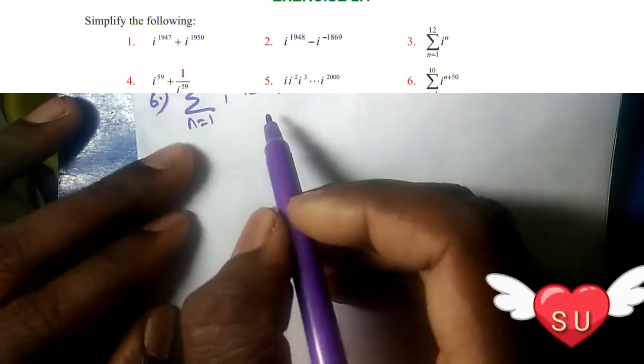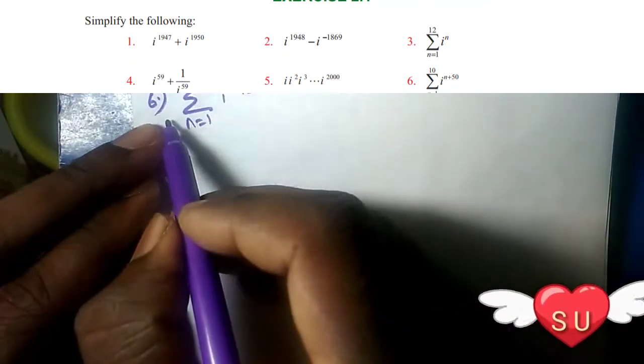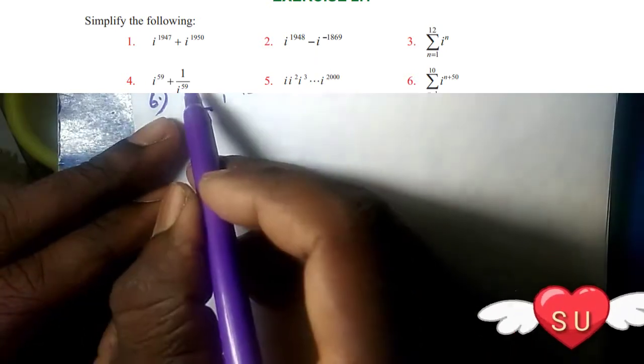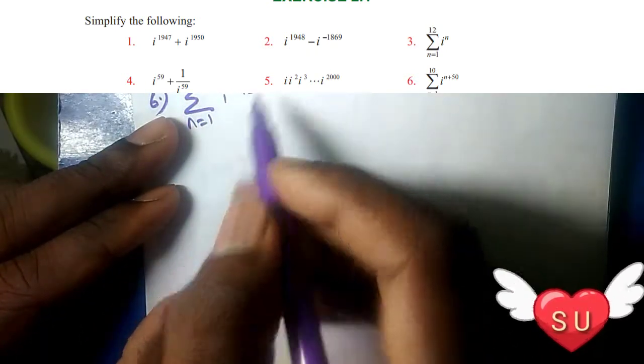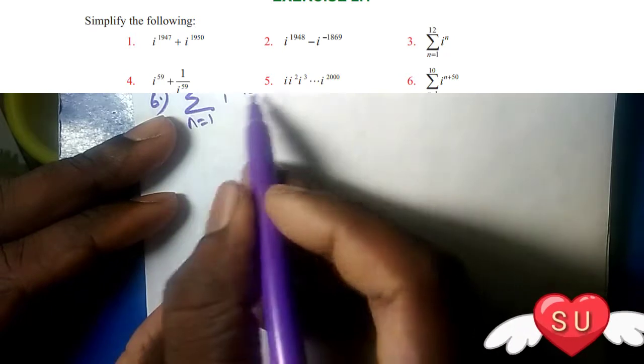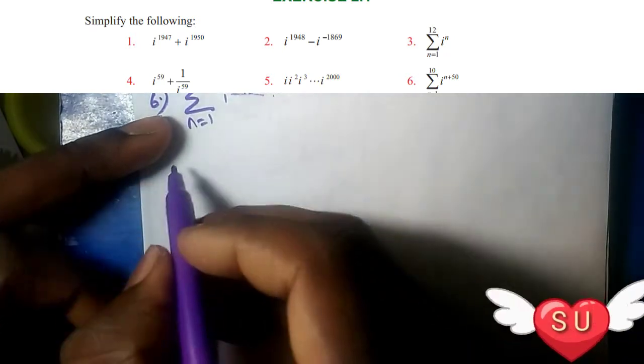Hi friends, welcome. This is Acky. In this video from section 2.1, we'll solve problem number 6: the sum from n equals 1 to 10 of i^(n+15) plus i^50.